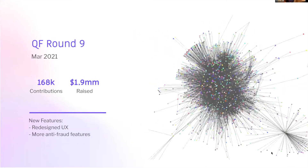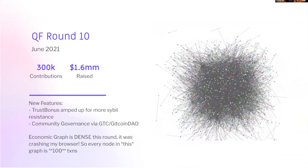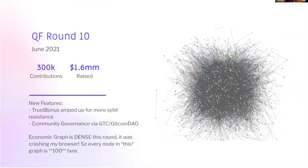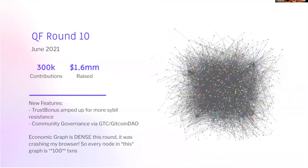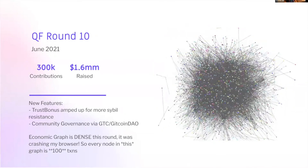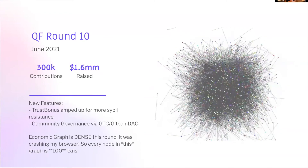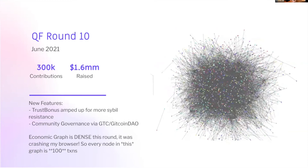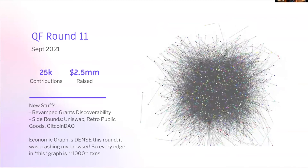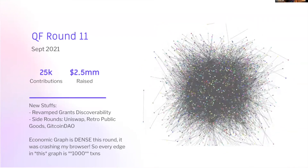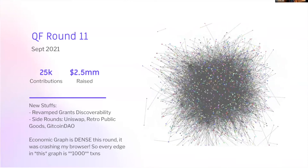Continuing through rounds eight, nine, and ten — we're getting into 2021 at this point. The preference map is absolutely massive now; we're raising over a million dollars with quadratic funding for the Ethereum community every quarter. Continuing to focus on scalability, usability, and sybil resistance, this all culminated in round eleven with raising $2.5 million in the Ethereum community and 25,000 contributions.